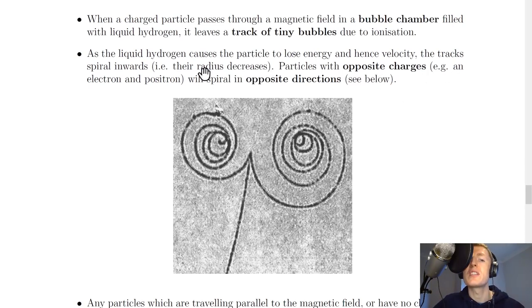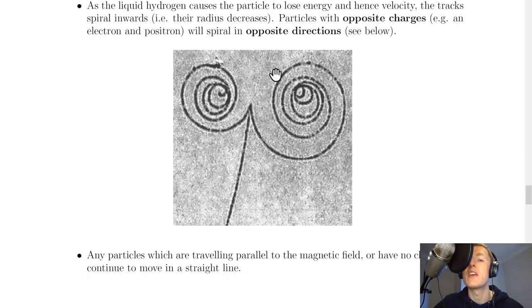Particles with opposite charges, for example an electron and positron, will spiral in opposite directions, like shown in this picture here.